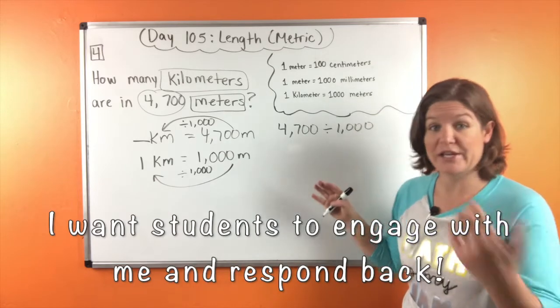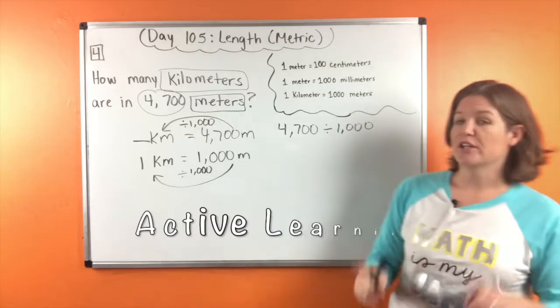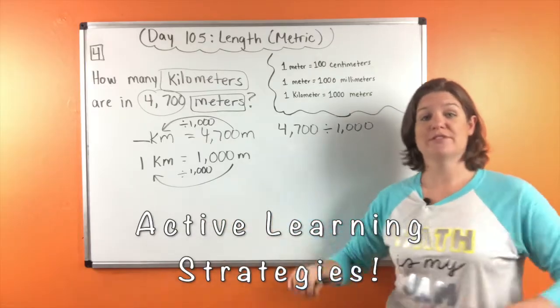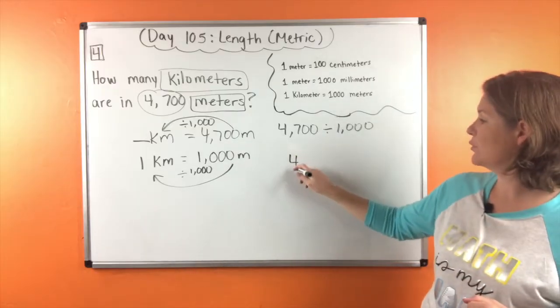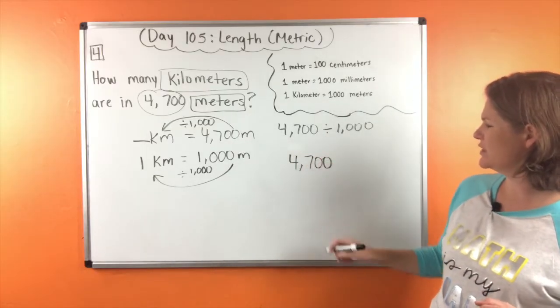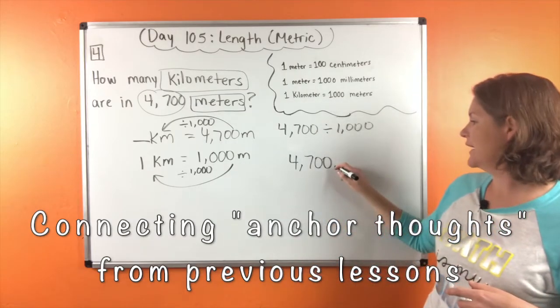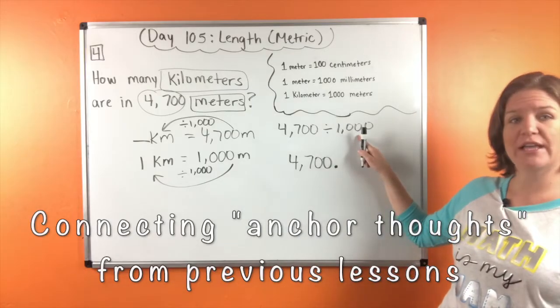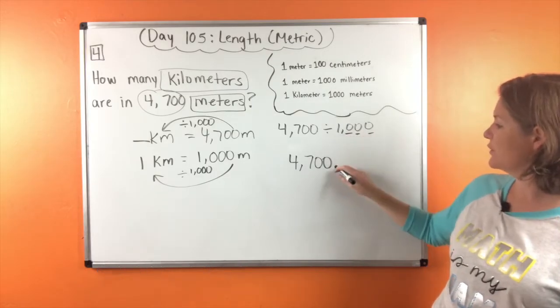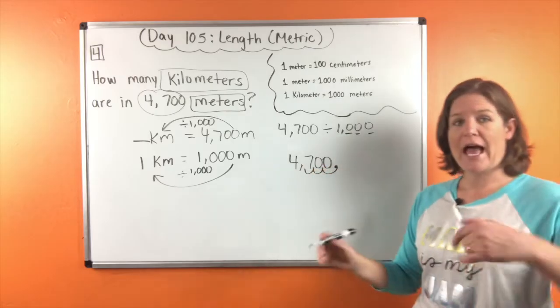We can shift our decimal to the left to make the value less. So let's do that. 4,700, where's the decimal? Look, it's right there. And shifting it how many hops to the left? One, two, three zeros. So one, two, three hops to the left.